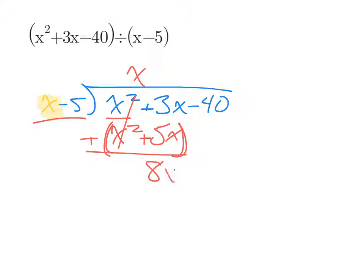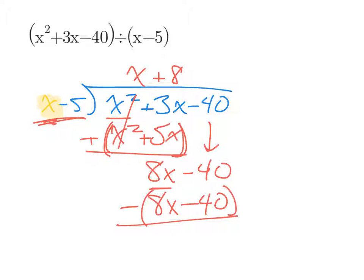So that'll make 8x. Next, we bring down the next term, negative 40, and repeat the whole process. How many times does this x go into 8x? Well, we would have to multiply it by 8. So let's do that. Multiply the entire expression, x minus 5, by 8. And we're left with 8x minus 40. When we subtract, 8x minus 8x is 0. Negative 40 minus negative 40 is 0. So we're done. When we divide x squared plus 3x minus 40 by x minus 5, we are left with x plus 8 for a solution.